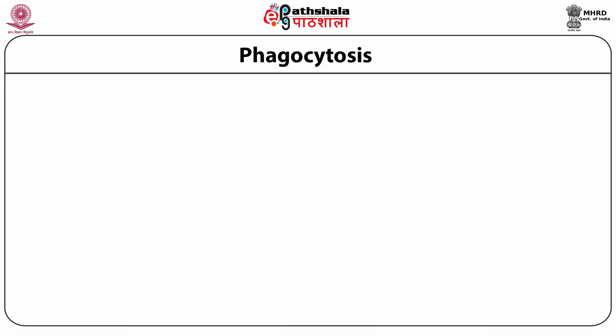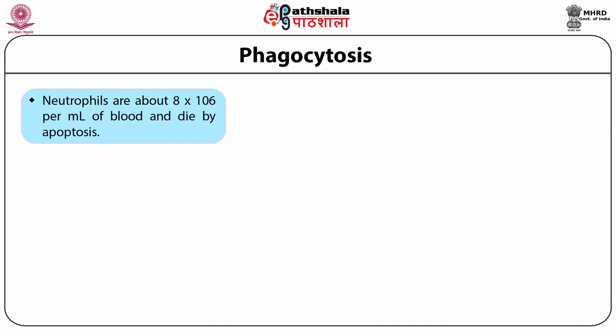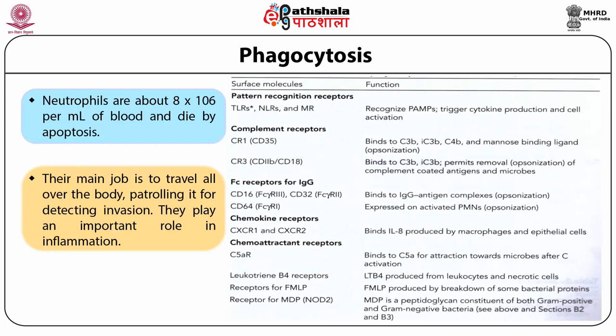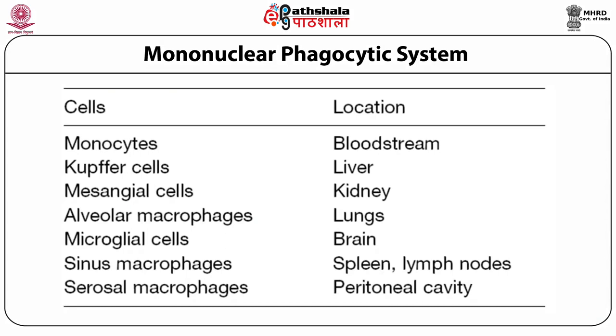Neutrophils after moving from the bone marrow do not last long and end up participating in phagocytosis only a few times. Neutrophils are about 8×10⁶ per ml of blood and die by apoptosis. Their main job is to travel all over the body, patrolling it for detecting invasion. They also play an important role in inflammation. Their surface receptors — including pattern recognition receptors, complement receptors, Fc receptors, and chemo-attracting receptors — enable them to act towards a variety of microbes.